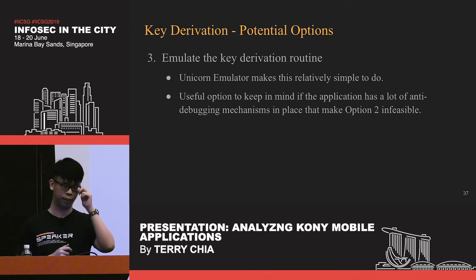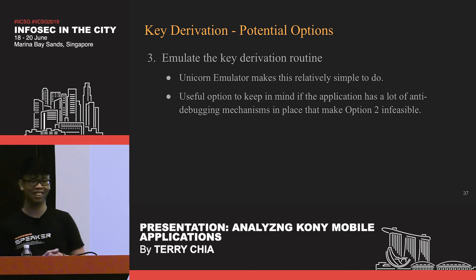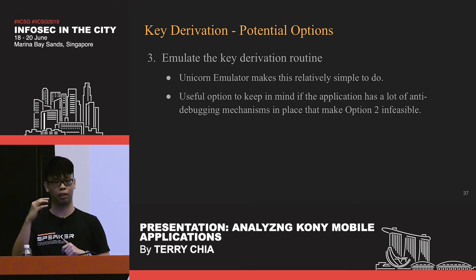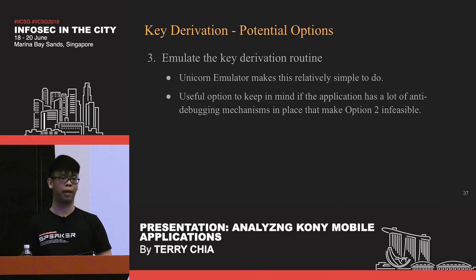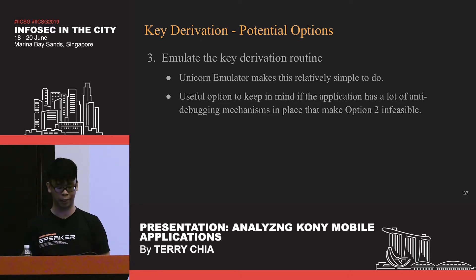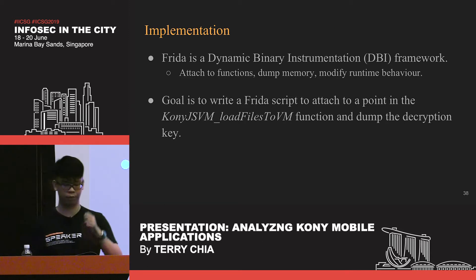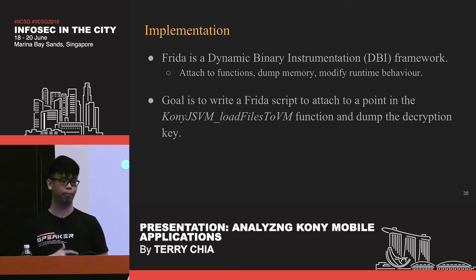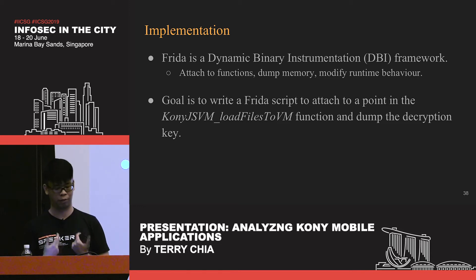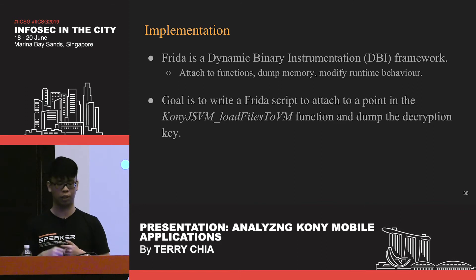I decided to use Frida, a dynamic binary instrumentation framework, to implement the decryption routine. The goal is to write a Frida script that attaches to a point in the key derivation process and dumps the decryption key when complete. The SHA256 function is the most appropriate hook point since that is when key derivation is finished. The third argument to that function is a pointer to where the hashing output is written, so we hook it and extract 32 bytes when the function completes.